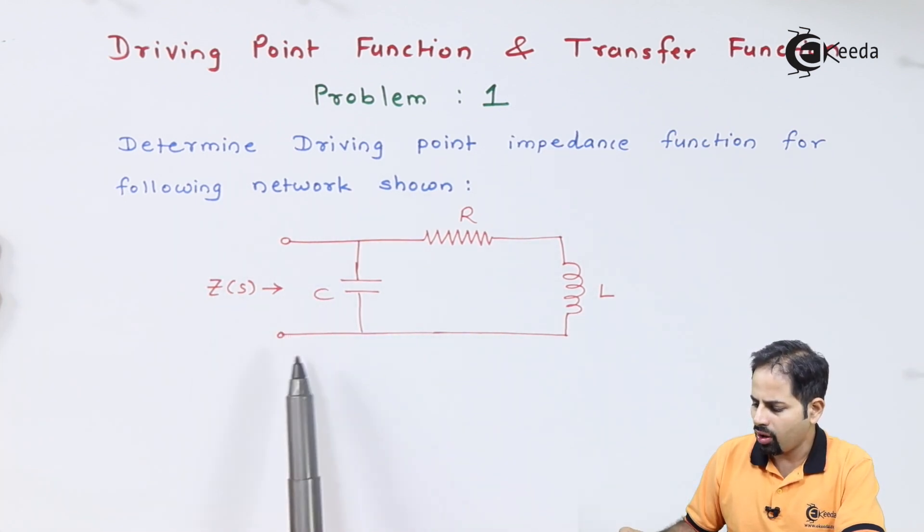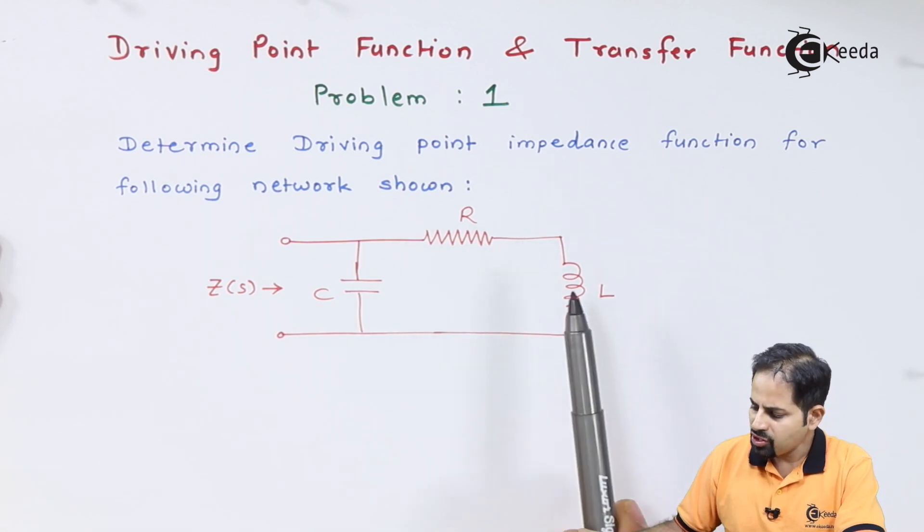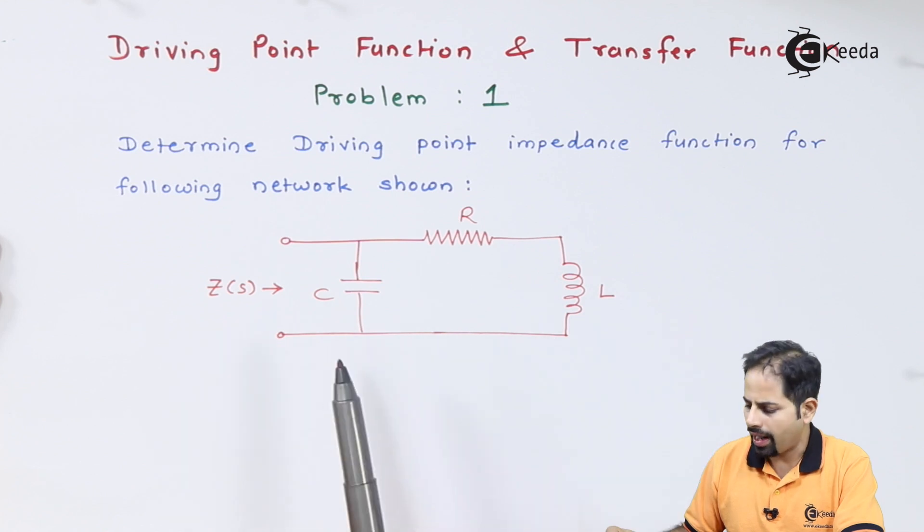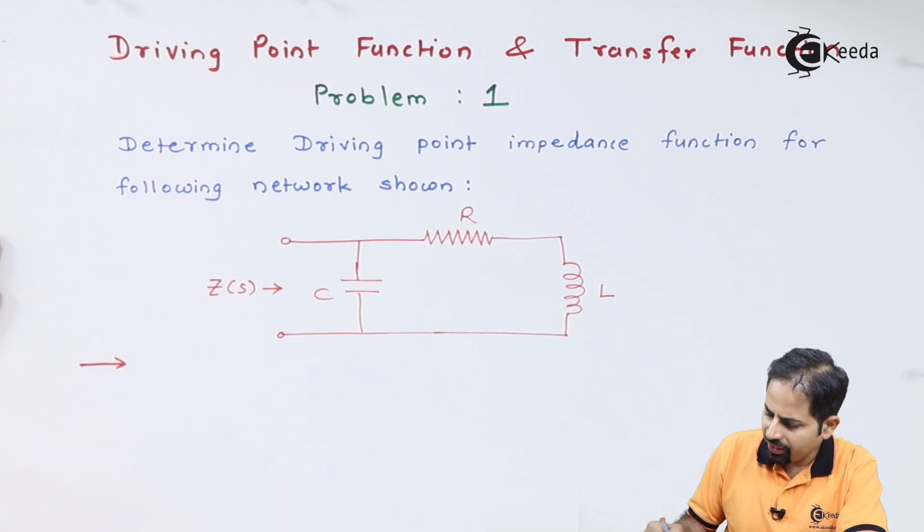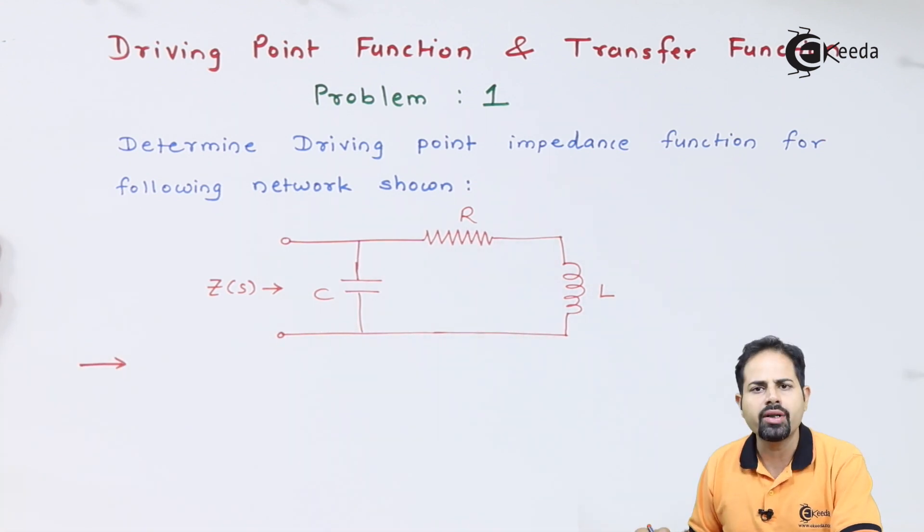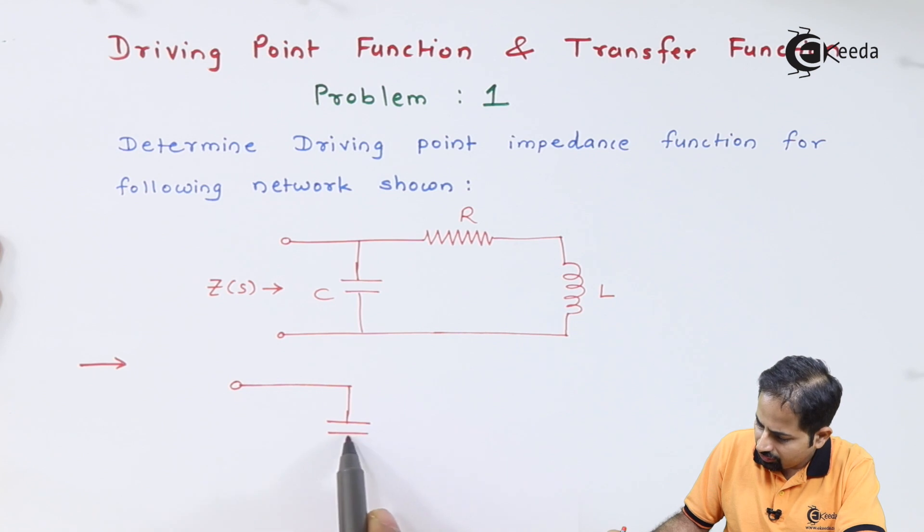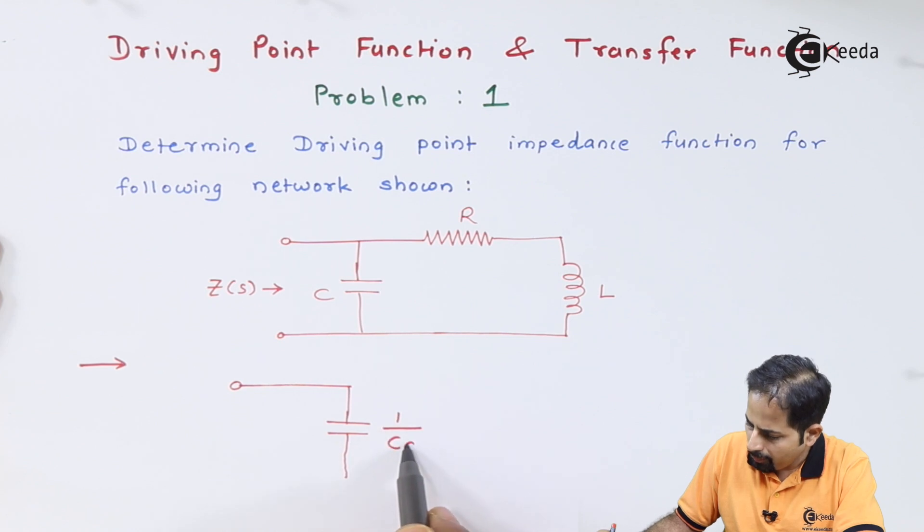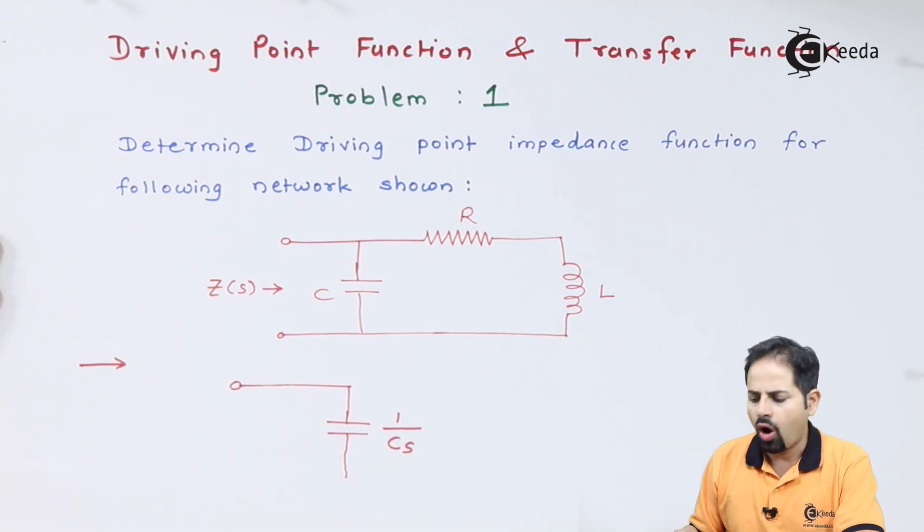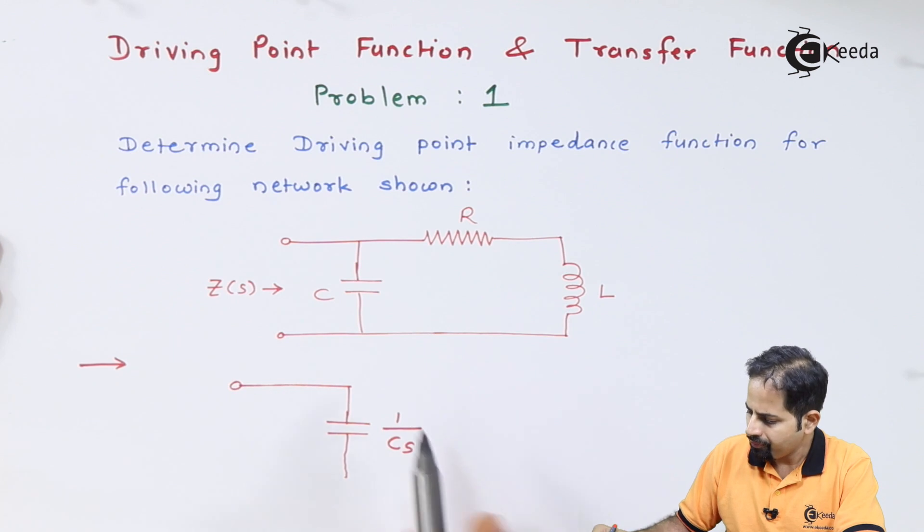The problem is determine the driving point impedance, that means Z or we can call Z(s), for following network. Now there are only two terminals, that means there is one pair of terminal, so it is only one port network. Now when you solve this circuit you have to transform all these parameters in their respective impedances. Capacitor gets transformed to impedance 1 upon Cs.